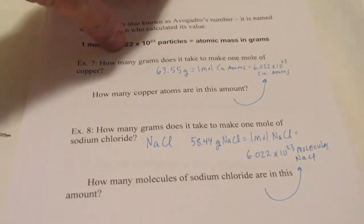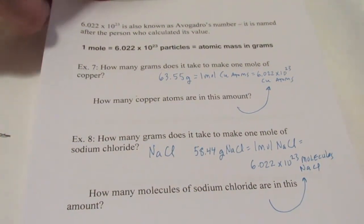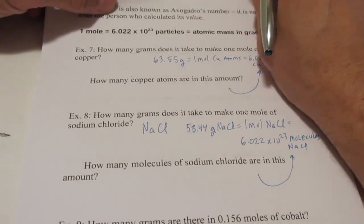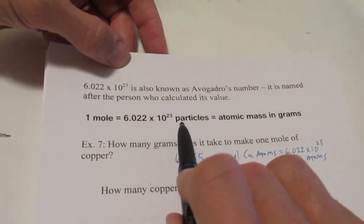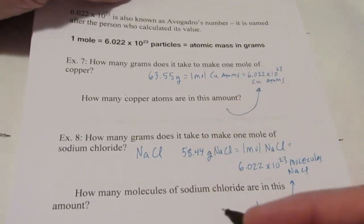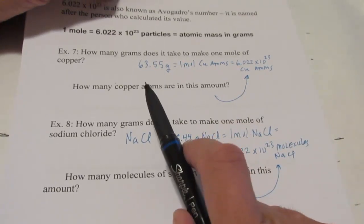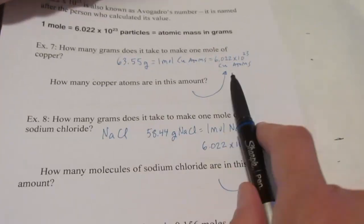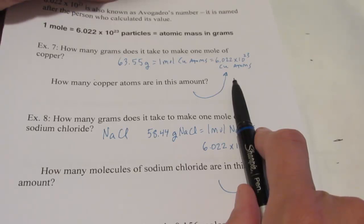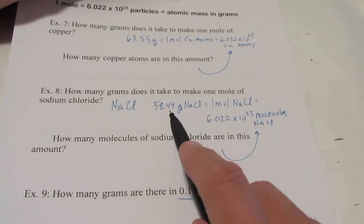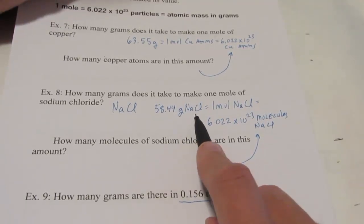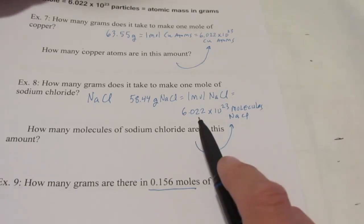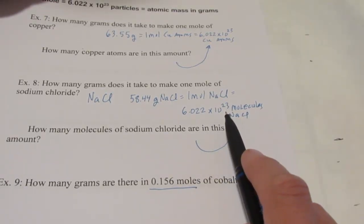All righty. Here we are. We're back for part five, I believe, of our atomic theory discussion. For part four we really concentrated on the mole concept. I introduced you to the mole concept. You guys know what Avogadro's number is, I hope. You know how to calculate the atomic mass of an element as well as a compound. And you know that the atomic mass of an element in grams gives you one mole of that element's atoms, or 6.022 times 10 to the 23rd of that element's atoms. You also know, I hope, that the formula mass or molecular mass in grams of a compound gives you one mole of that compound's molecules, or 6.022 times 10 to the 23rd of those molecules.